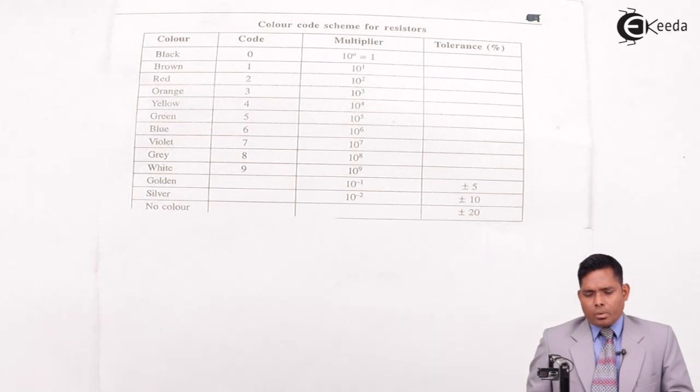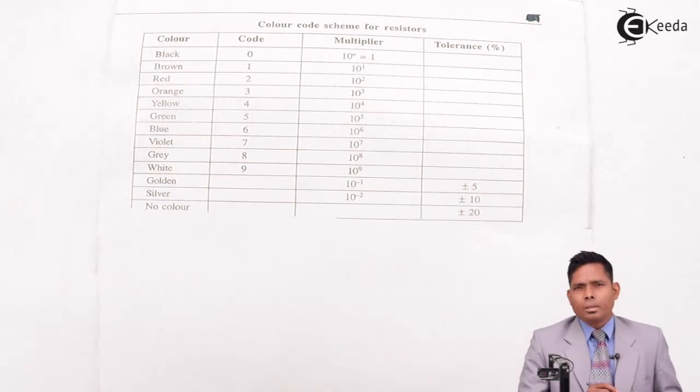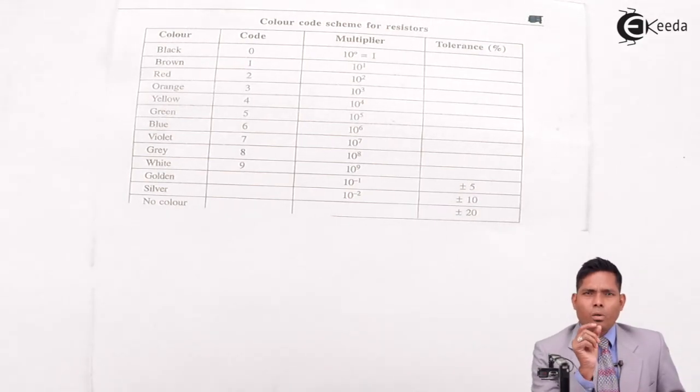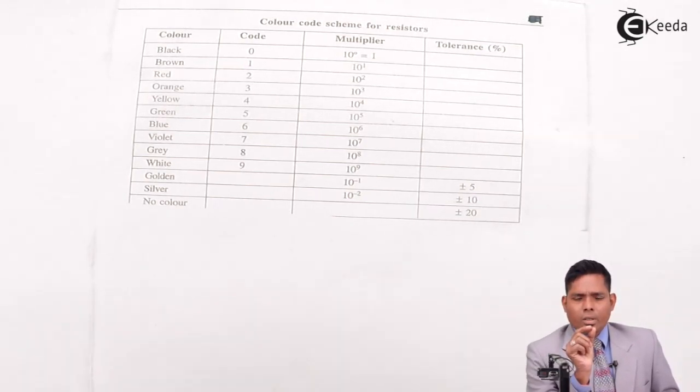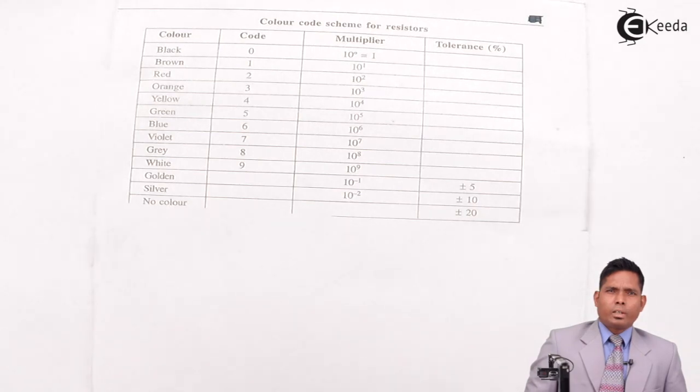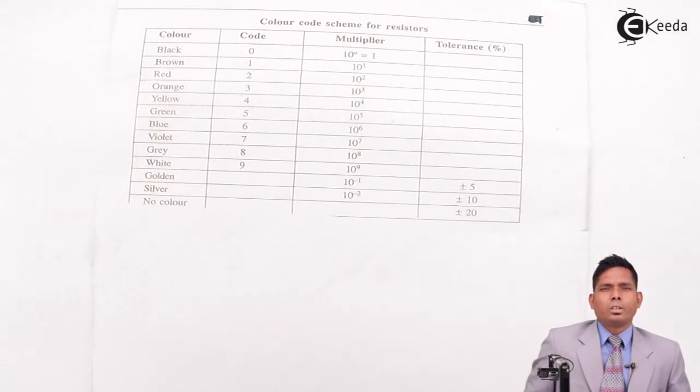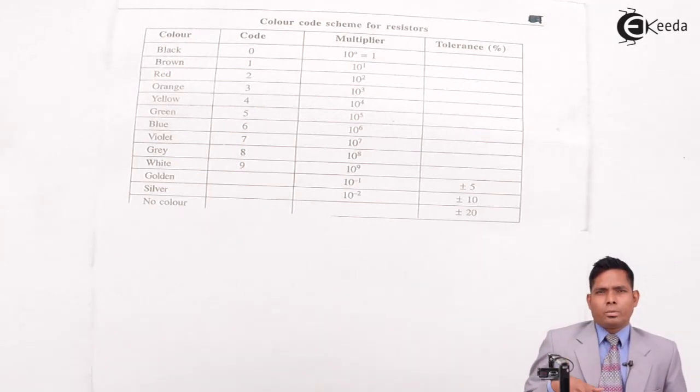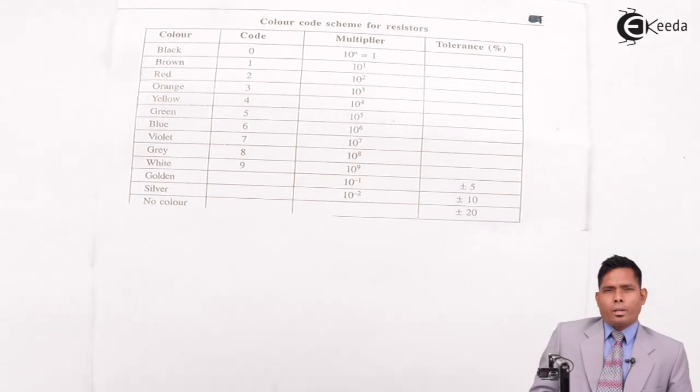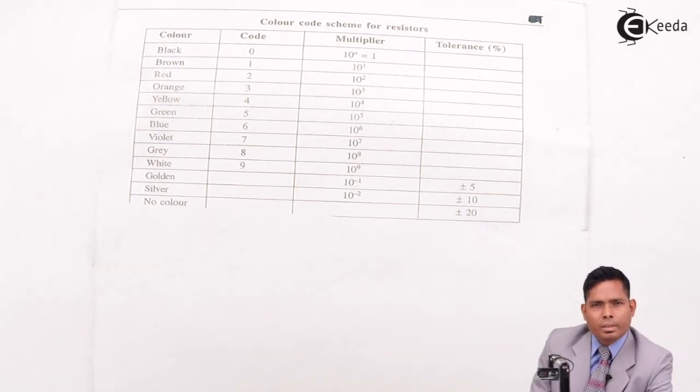Students, today we will discuss the color code for resistors. Resistors are available in very small size. Because it is small size, you cannot write the value of the resistance in resistors. So we give different colors to describe the value of the resistance.